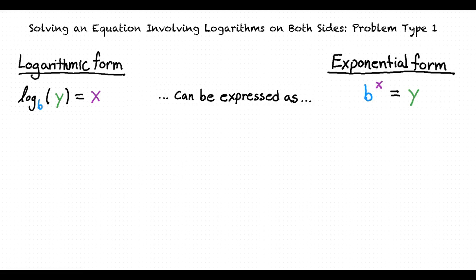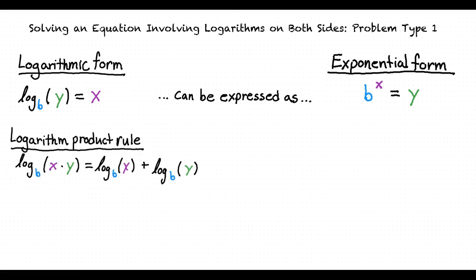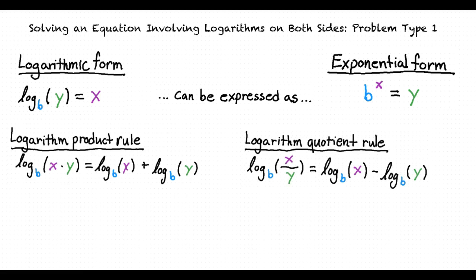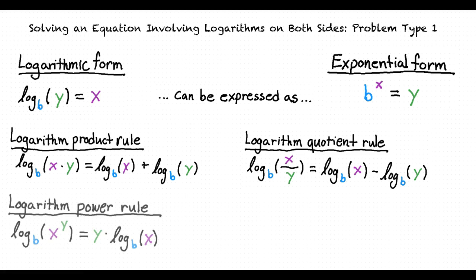It's also important to remember certain properties of logarithms, such as the logarithm product, quotient, and power rules. The product rule states that the base b logarithm of x times y equals the base b logarithm of x plus the base b logarithm of y. The quotient rule states that the base b logarithm of x divided by y equals the base b logarithm of x minus the base b logarithm of y. The power rule states that the base b logarithm of x to the y power equals y times the base b logarithm of x.